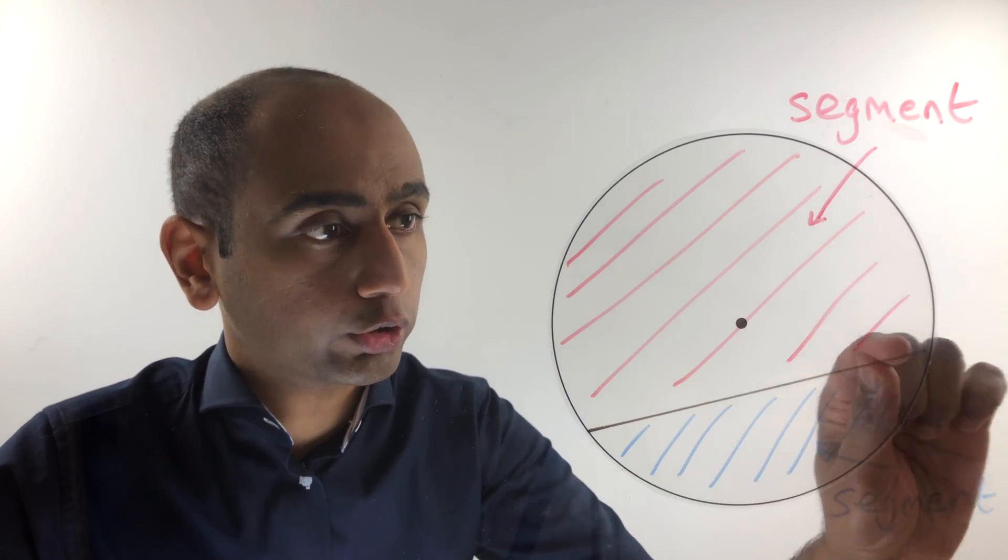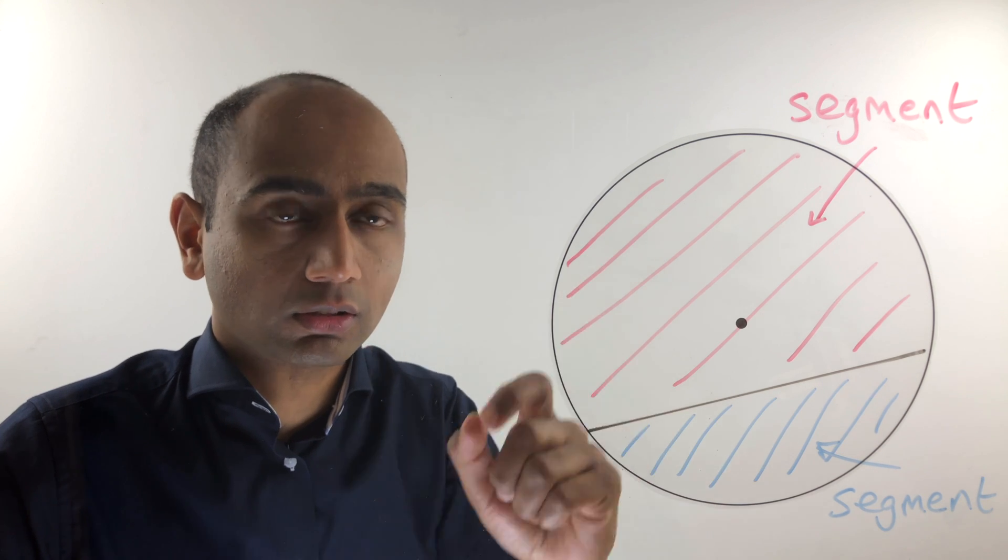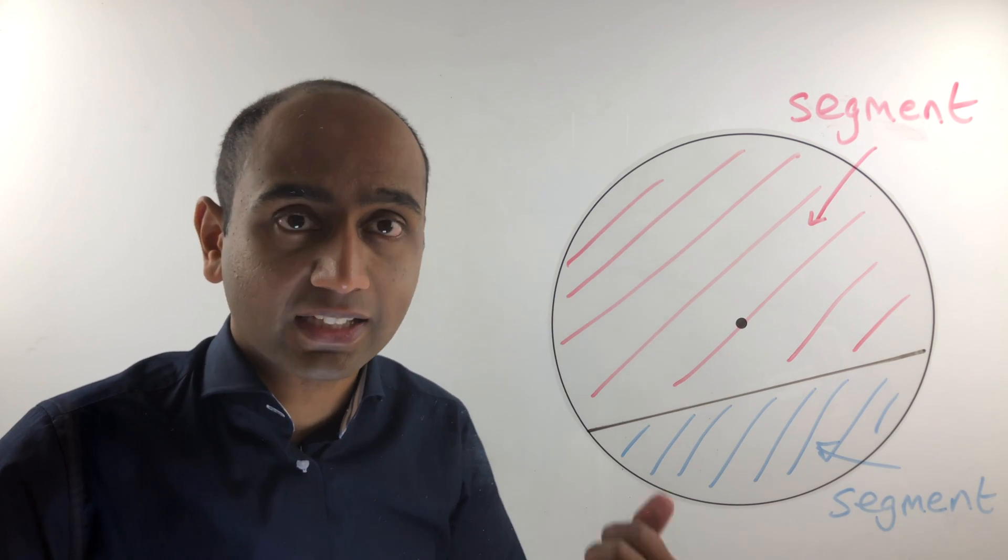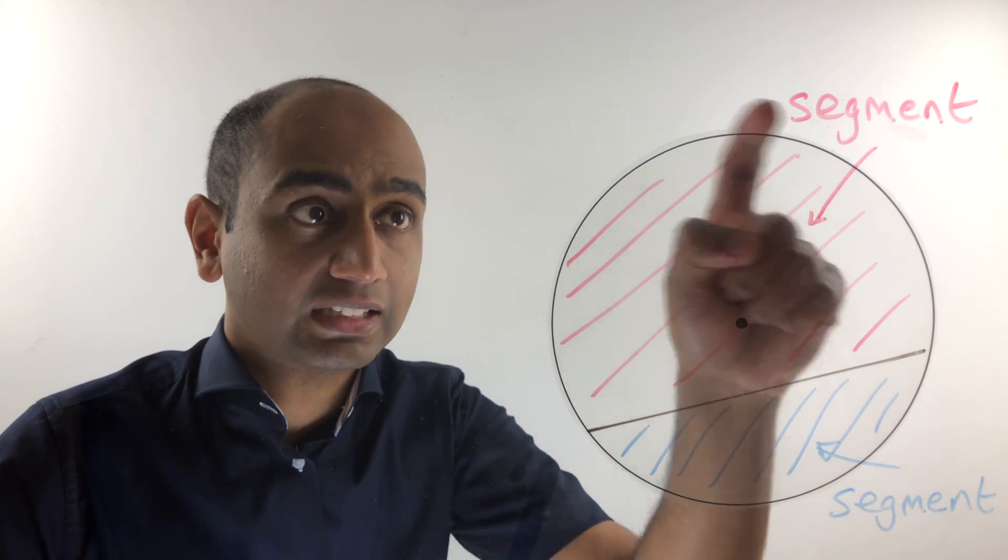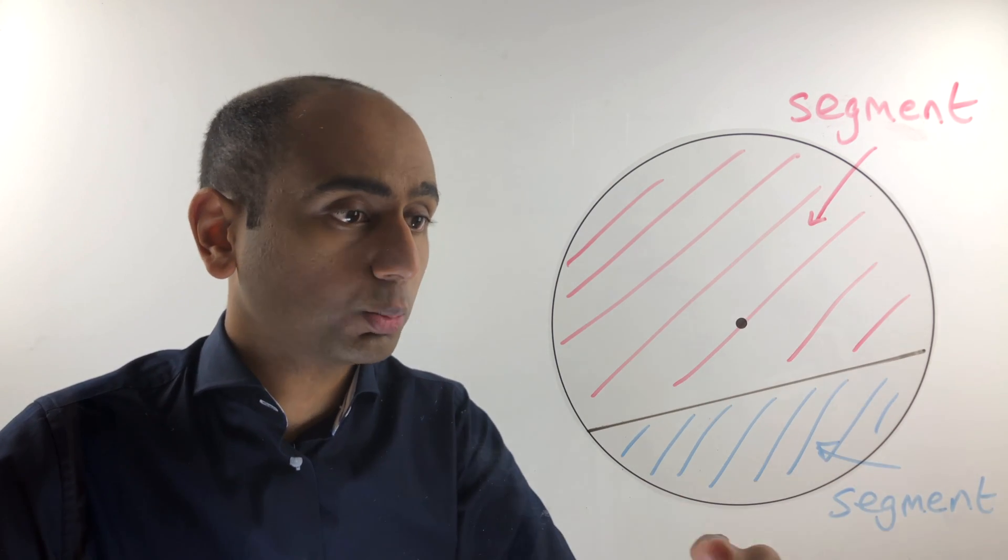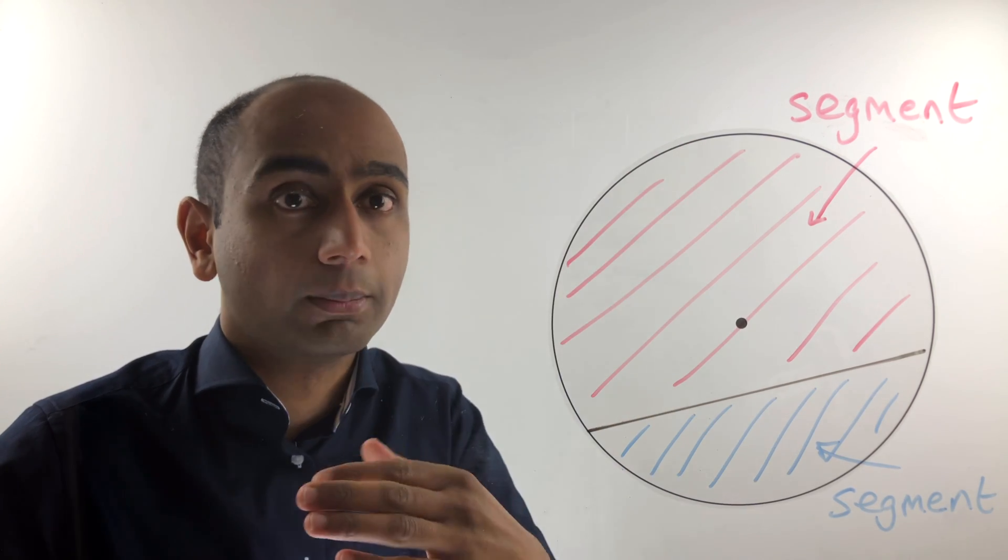Now if you draw a chord on a circle, you effectively split it into two segments. Just as we saw with sectors and arcs, we've got a smaller segment and a larger segment. The smaller segment is called the minor segment, and the larger segment is called the major segment.